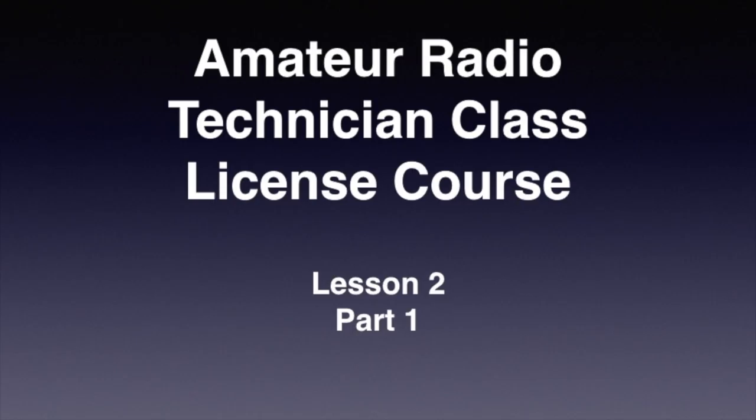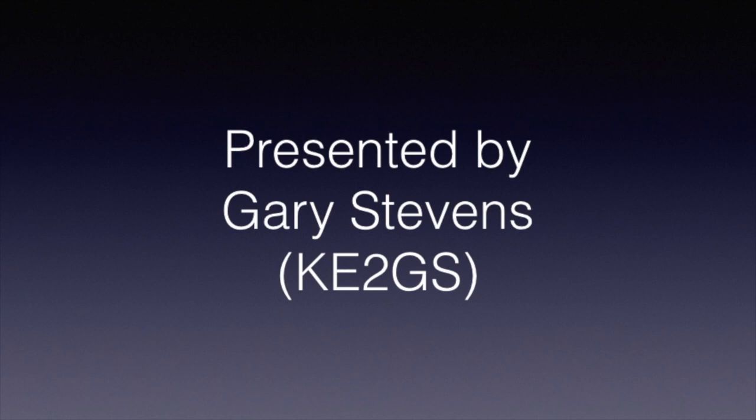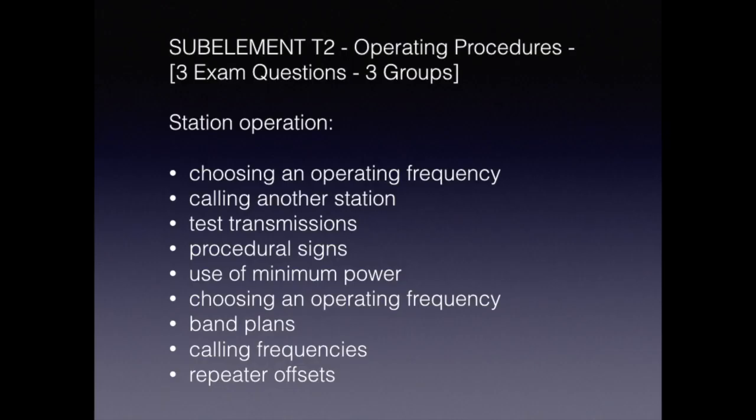Hello, and welcome back to the Amateur Radio Technician License Course. This is Lesson 2, Part 1. Let's get started, because it's a great day to learn. I'm your instructor, Gary Stephens, KE2GS. In Lesson 2, we're going to be talking about Sub-Element 2, which is Operating Procedures.